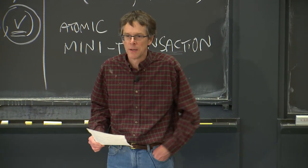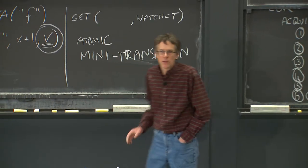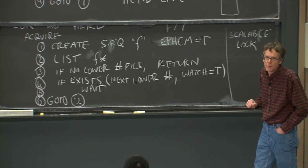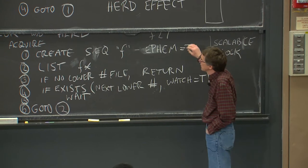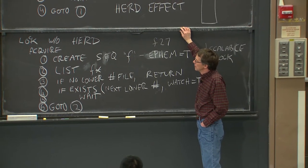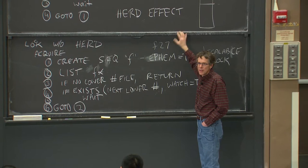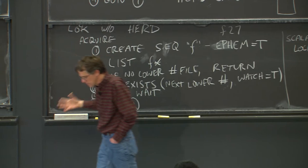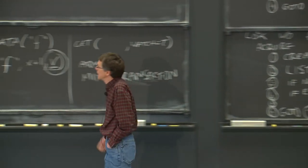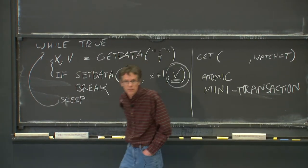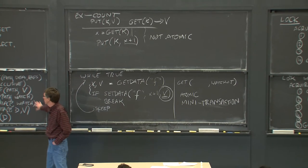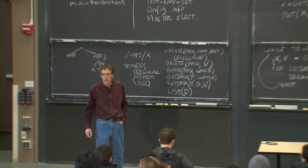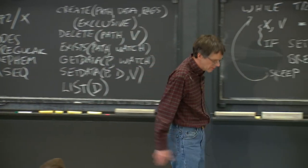That's all for ZooKeeper. The two key takeaways: first, they have clever ideas for high performance by reading from any replica, sacrificing a bit of consistency. Second, the interesting take-home is that they worked out an API that really does let ZooKeeper be a general-purpose coordination service — in a way that simpler put/get interfaces can't do — allowing mini-transactions, custom locks, and more.